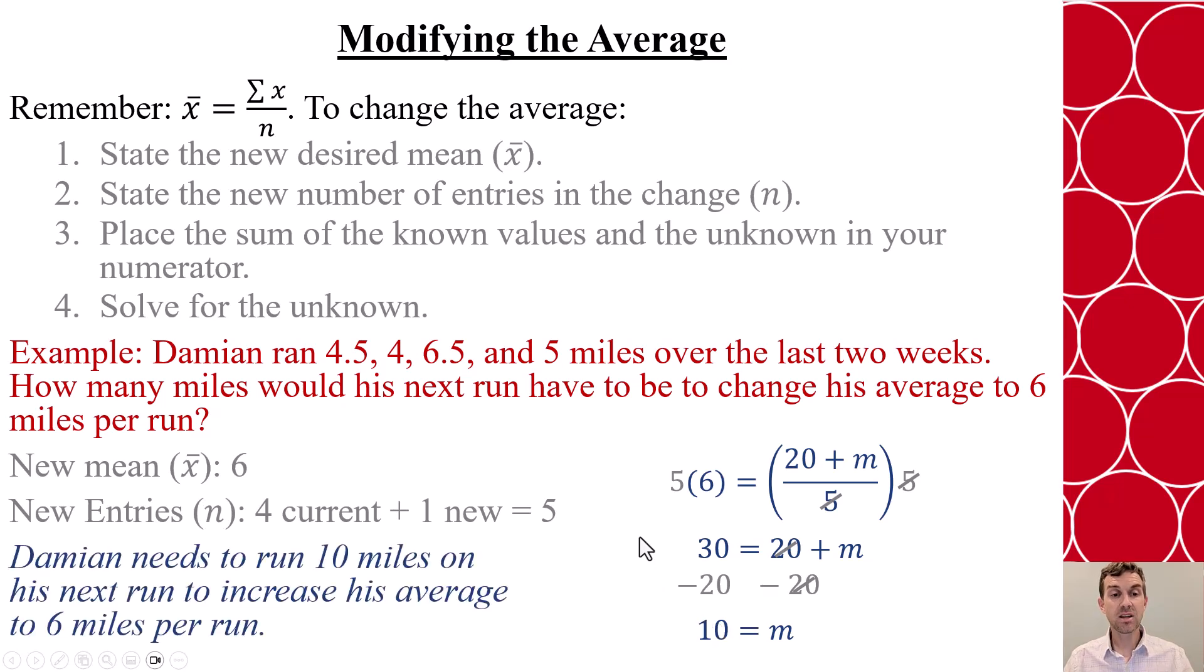This means that Damien needs to run 10 miles on his next run to increase his average to 6 miles per run. And you can check that. If I plug 10 in here, 20 plus 10 is 30. 30 divided by 5 would give me 6.